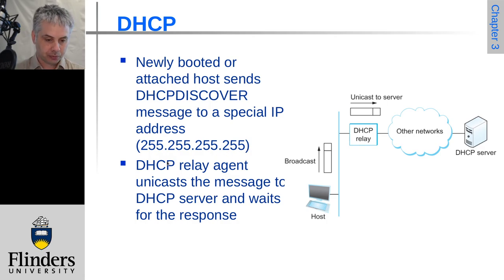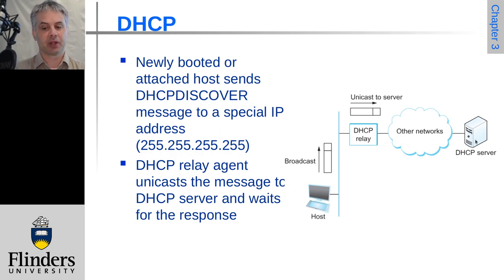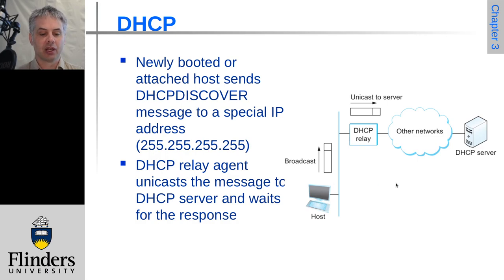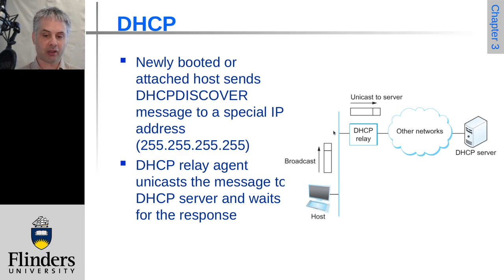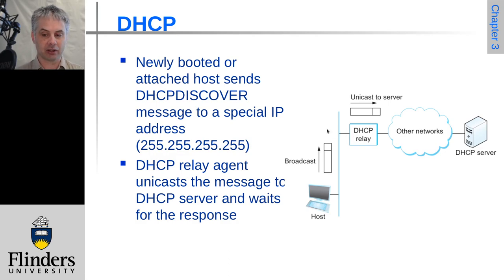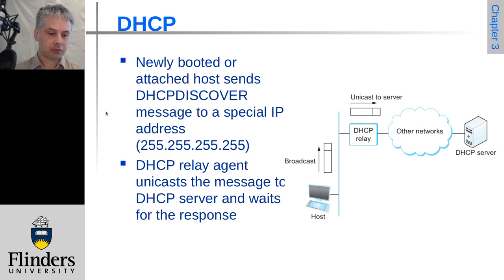If the DHCP server is not on the local segment, you need DHCP relay agents that monitor for these packets and send them directly to the DHCP server, potentially across other network segments in the organisation. The relay agent waits for the response from the DHCP server and relays it back to the host. So it's broadcast up to the first DHCP relay, or directly to a connected DHCP server if no relays exist, but otherwise it's a unicast from there.